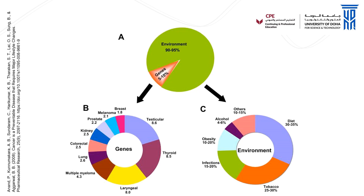Diet and other lifestyle factors such as tobacco, alcohol use, and obesity all increase the risk of cancer formation. And all of those are modifiable — things that can improve the chances of avoiding cancer in a lifetime.